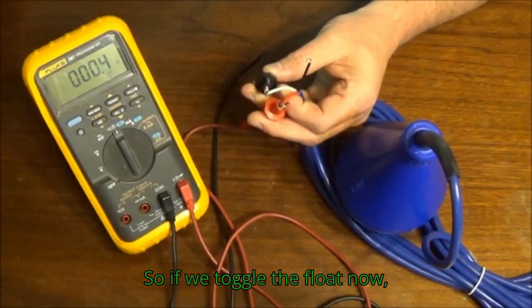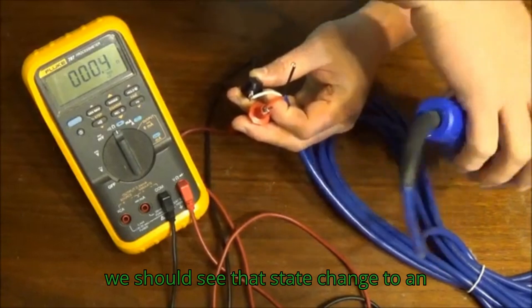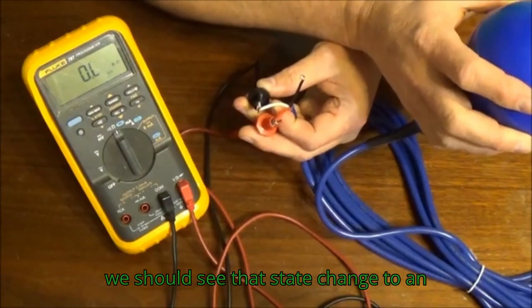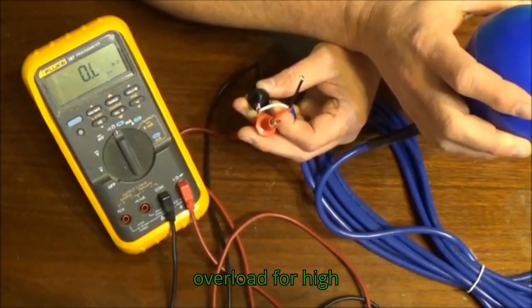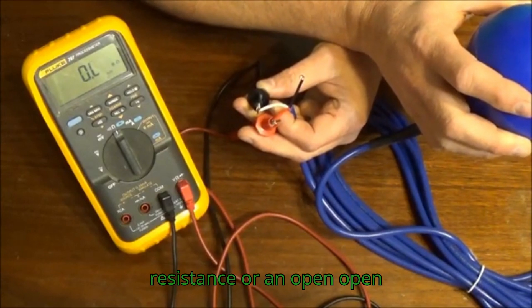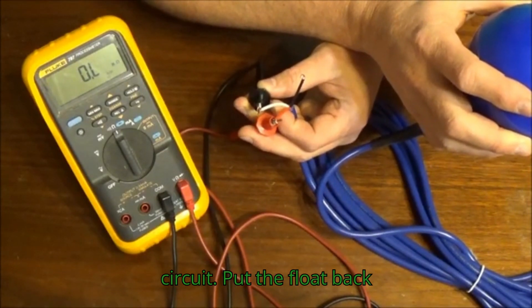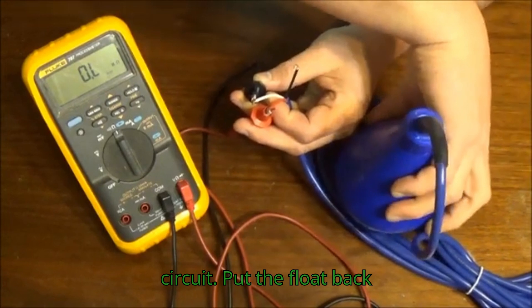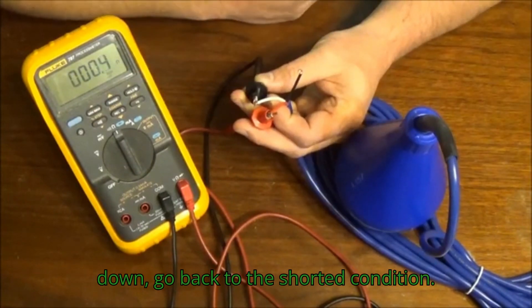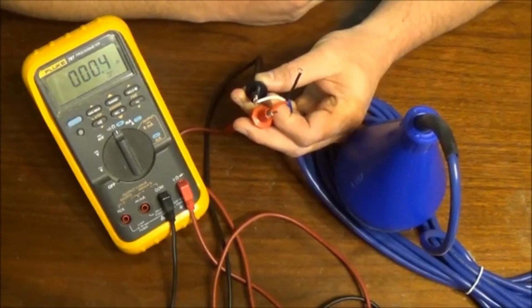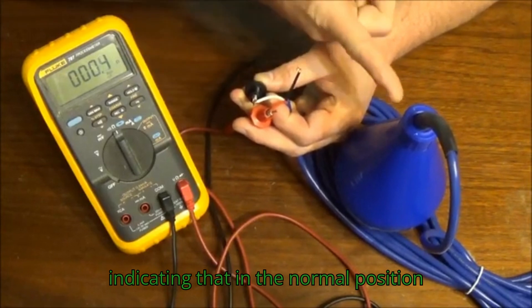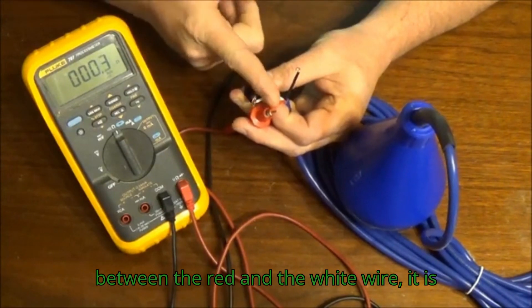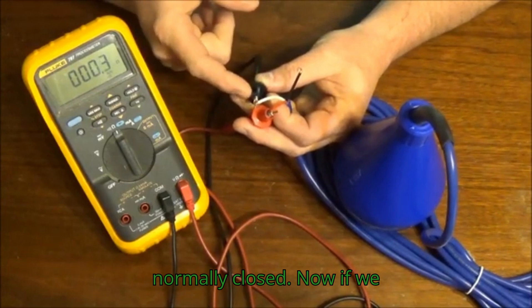If we toggle the float now, we should see that state change to an overload for high resistance or an open circuit. Put the float back down, go back to the shorted condition, indicating that in the normal position between the red and the white wire, it is normally closed.